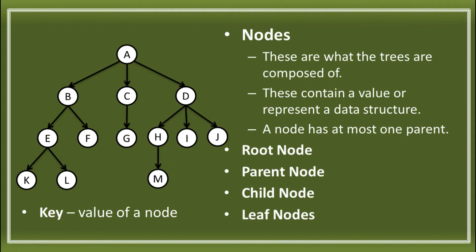Next, we have the leaf node. Leaf nodes are the outermost nodes — the nodes that have no more child nodes. The outermost nodes in our TREE are K, L, F, G, M, I, N, and J. Those are the leaf nodes.